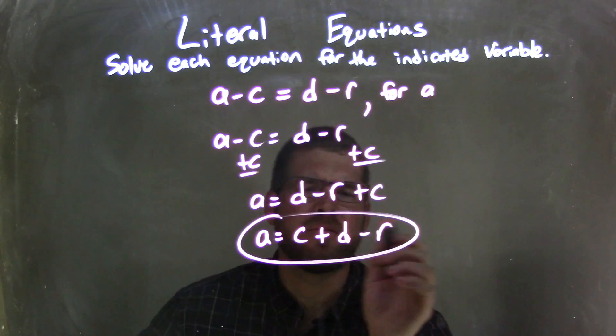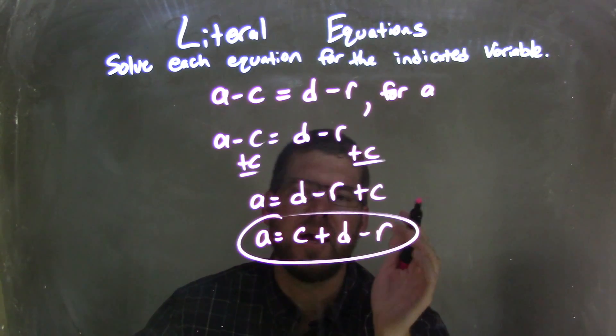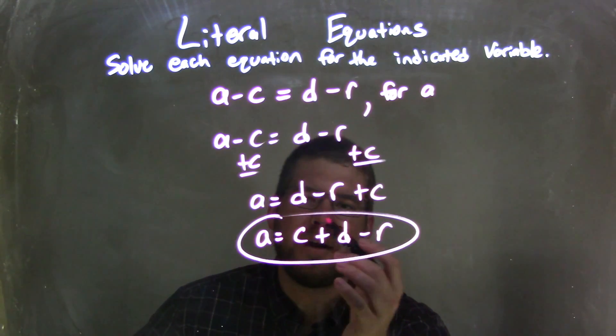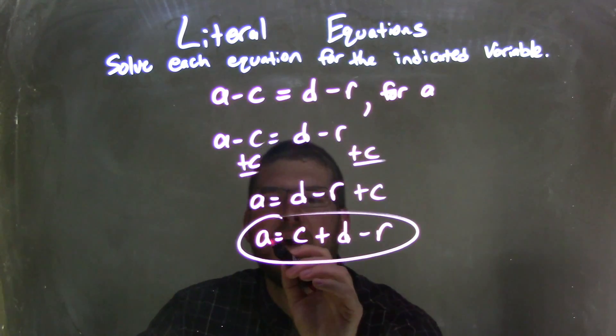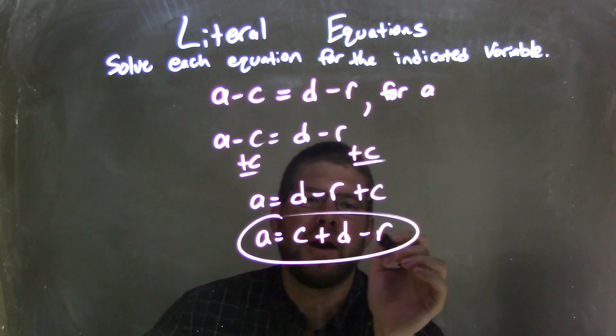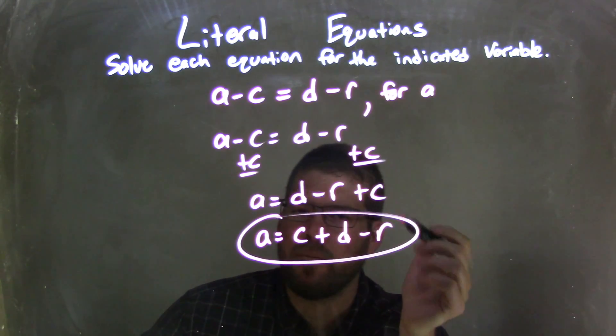Some people might say to have the addition first, then the subtractions. Whatever, it doesn't matter. But either way, our final answer is A equals D minus R plus C, or, in this case, A equals C plus D minus R. They're both the same thing.